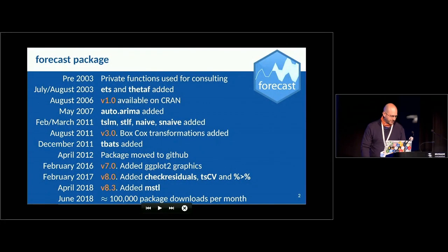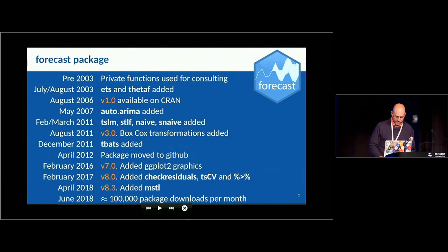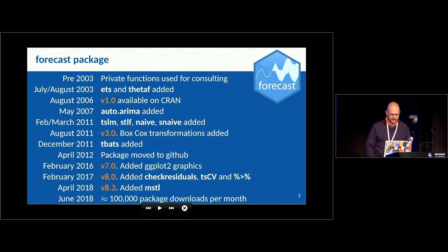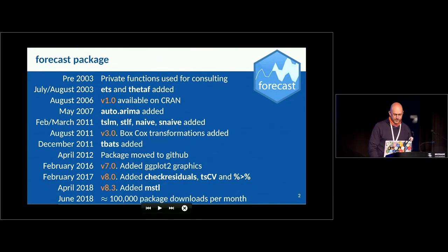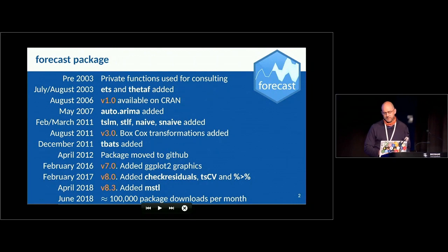Let me go back a little bit. Those who do forecasting probably know about the forecast package, which is probably the best known of the packages I've written. It began a long time ago — I was using R in the late 90s, writing functions for consulting projects. They eventually coalesced into a package which ended up on CRAN in about 2006 and has evolved since then. It's pretty widely used, with about a hundred thousand package downloads per month, so I can't change it very much without upsetting a lot of people. So I thought, if we're going to do something in the tidy framework, let's just leave that alone. People can continue to use it; I will continue to maintain it, but probably add new functionality to the FABL package rather than the forecast package.